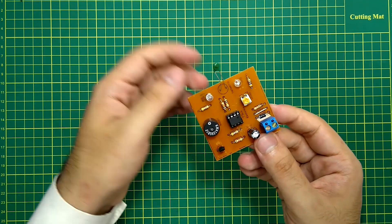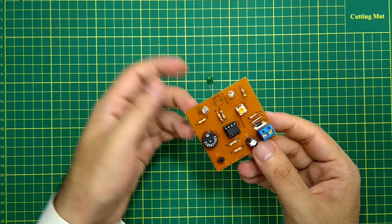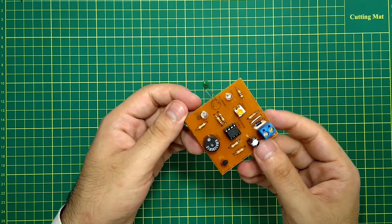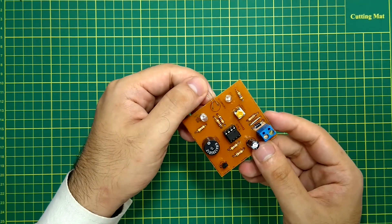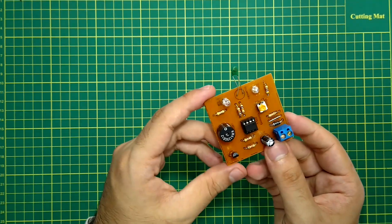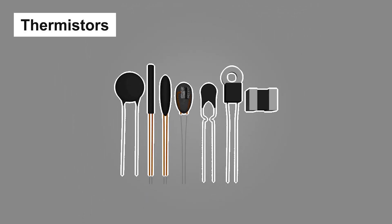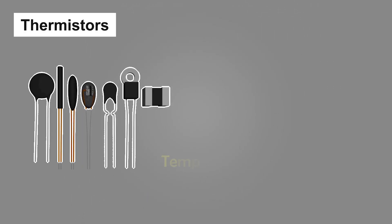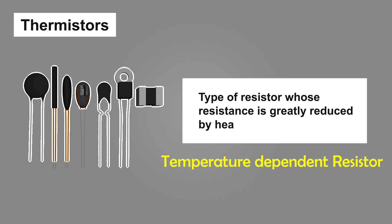I will use the thermistor, which I have used as a fire sensor. So first of all, I will tell you what is a thermistor. A thermistor is a type of resistor whose resistance depends on the temperature. If the temperature would be more, the resistance changes accordingly.